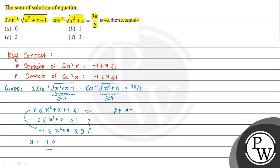If x = minus 1: we get 2 sin⁻¹(√((-1)² + (-1) + 1)) + cos⁻¹(√((-1)² + (-1))). The 1 and minus 1 cancel inside the first term, giving sin⁻¹(1) = π/2. So this becomes 2·(π/2) + cos⁻¹(0) = π + π/2 = 3π/2. This satisfies the equation.